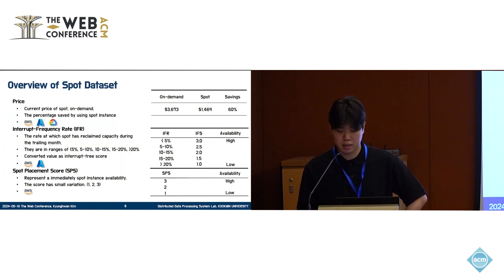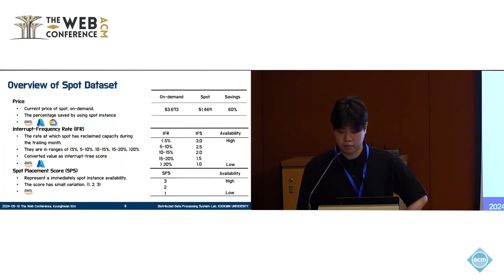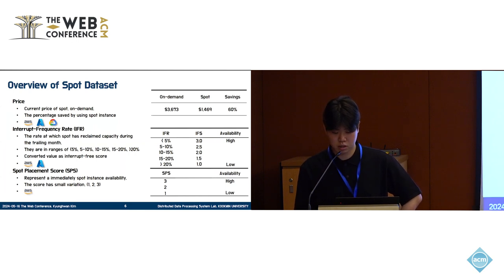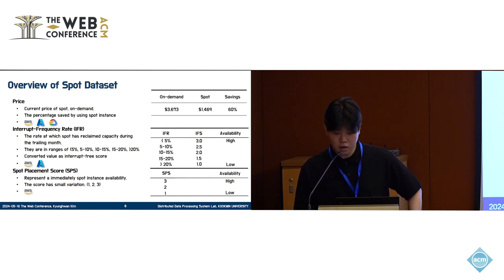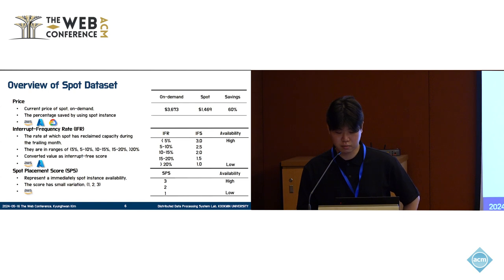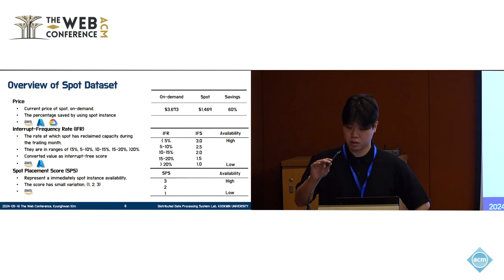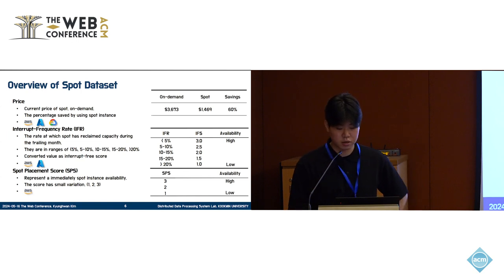There are two data types in the availability dataset: spot placement score and interruption frequency rate. Interruption frequency rate is an indicator of how often spot instances were terminated in the past month, categorized into 5 ranges from less than 5% to more than 20%. In this paper, the interruption frequency rate is mapped to a score increasing by 0.5 from 1 to 3, referred to as Interruption Frequency Score, or IFS for short. A higher score indicates high availability. IFS is provided by AWS and Azure. Spot Placement Score, or SPS, represents the immediate availability of Spot instances, and similarly, a higher score indicates higher availability. Only AWS provides Spot Placement Score.